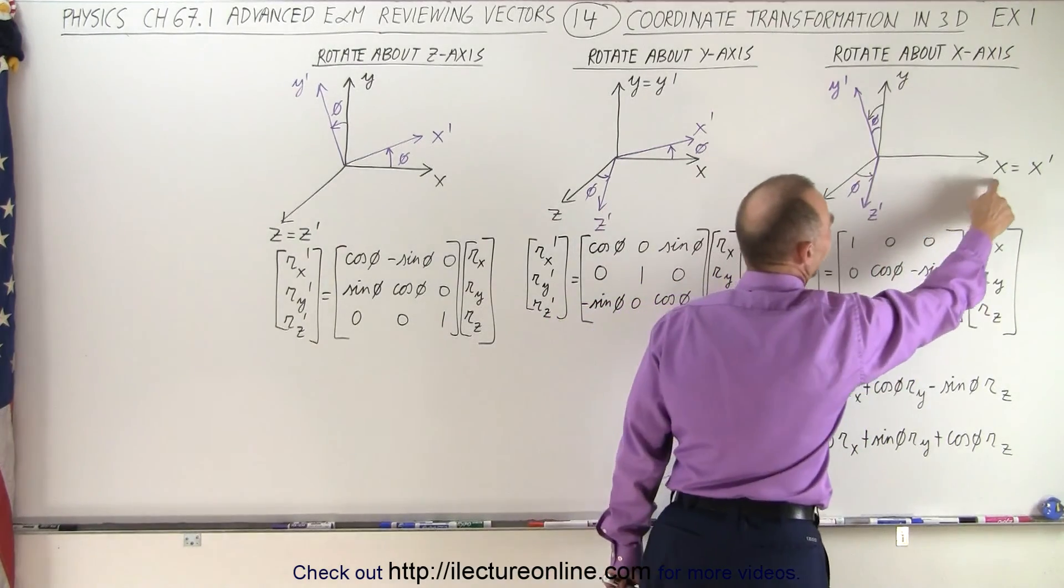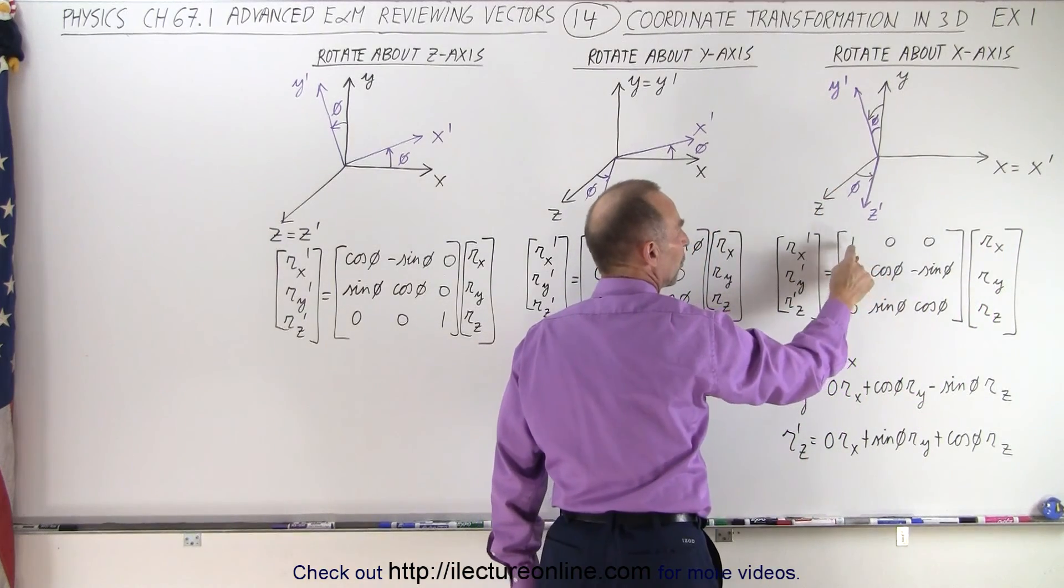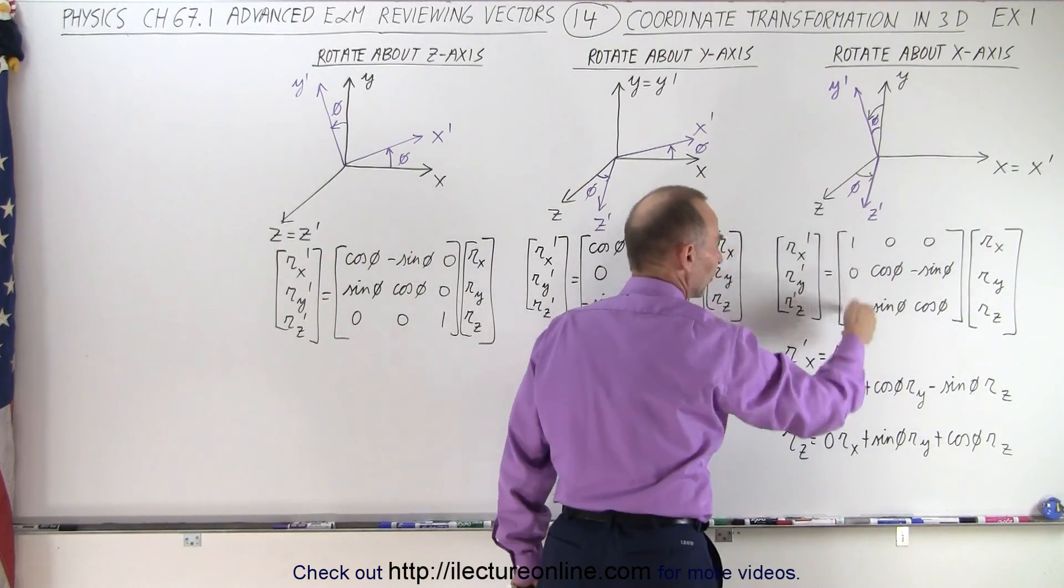Since the X and the X prime axis are in the same direction, notice we have a 1 here and 0s here and 0s there.